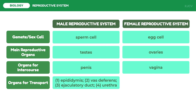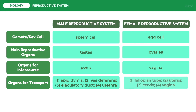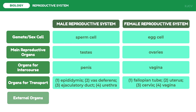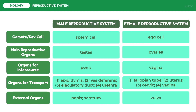Next, for the organs for transport: in males, sperm is stored in the epididymis and travels through the vas deferens, ejaculatory duct, and the urethra. In females, the egg cell travels through the fallopian tube to the uterus, cervix, and to the vagina. Lastly, for the external organs: in males we have the penis and scrotum; in females the external organs are collectively called the vulva.